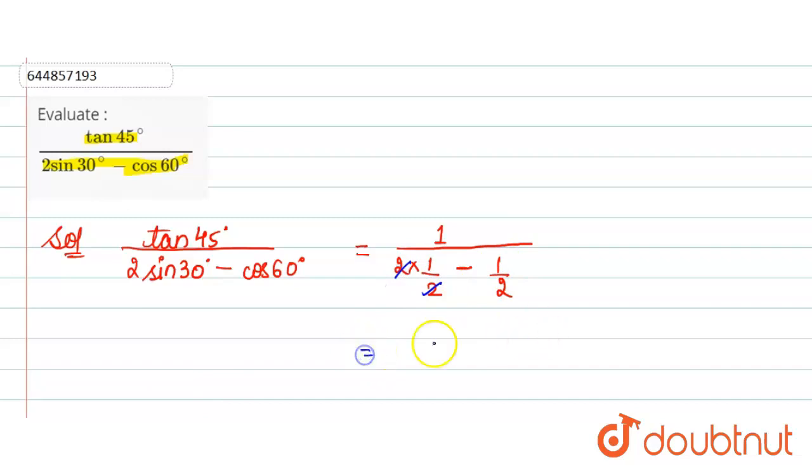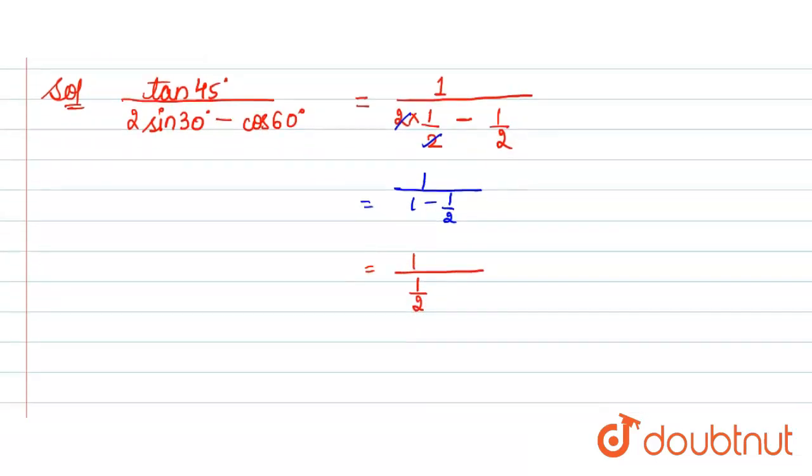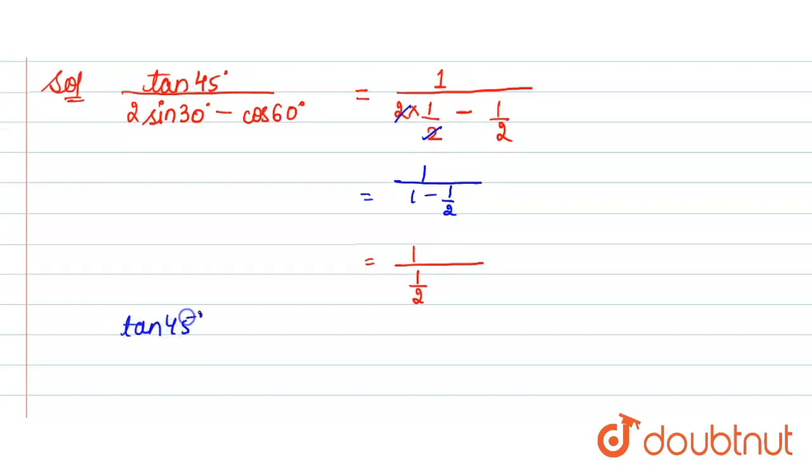So we get 1 divided by 1 minus 1 by 2. And when we take the LCM of 2, then we get here 1 divided by 2 minus 1 is 1 by 2. So value of tan 45 degree divided by 2 sine 30 degree minus cos 60 degree